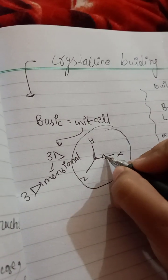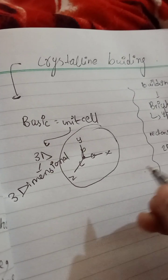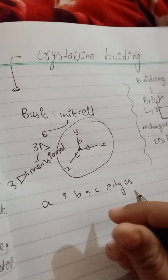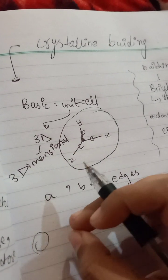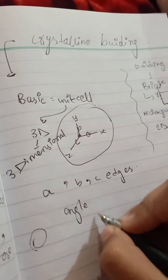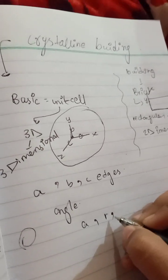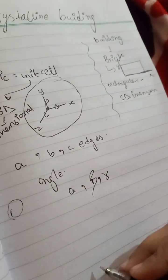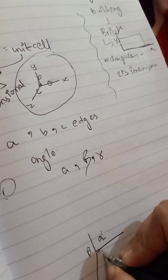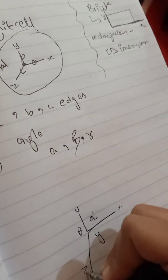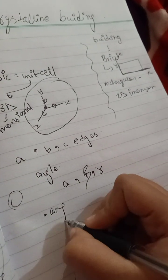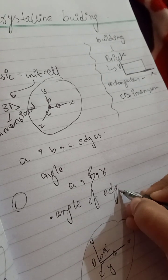We are having edges labeled a, b, and c — these are the edges, or the length of edges. For example, if we are making a room, increasing the length of the edges will make the room bigger. We also have angles: alpha, beta, and gamma. Here you can see alpha, beta, and gamma, along with x, y, z axes and edges a, b, c. From both edges and angles, the crystalline solid will develop.